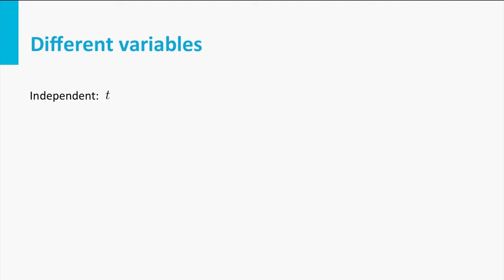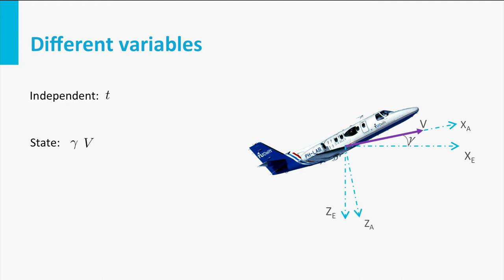Next, there are two variables which we call state variables: gamma the flight path angle and v the airspeed vector. These variables describe the state of the aircraft and indicate basically in which direction the aircraft is flying. These are the variables we would like to calculate if we try to answer questions like how steep can an aircraft climb.